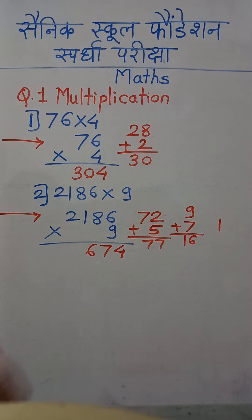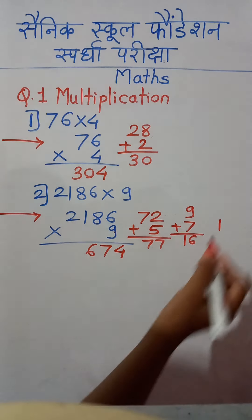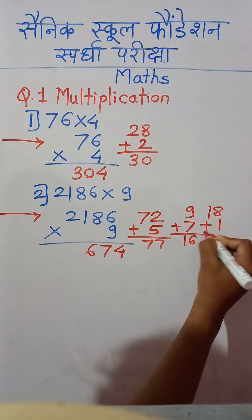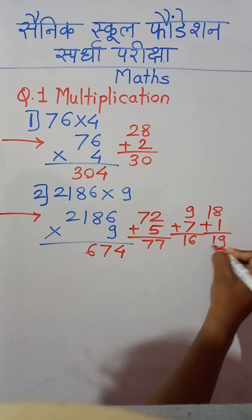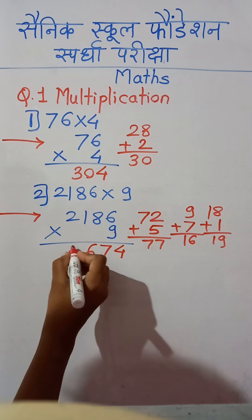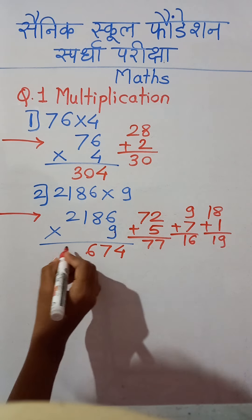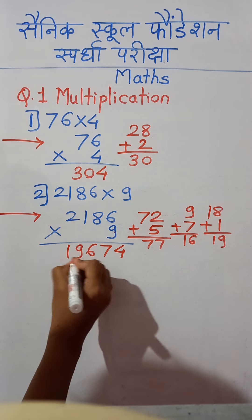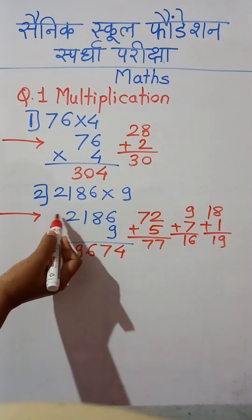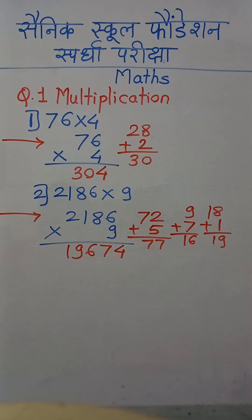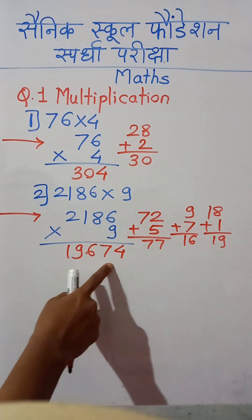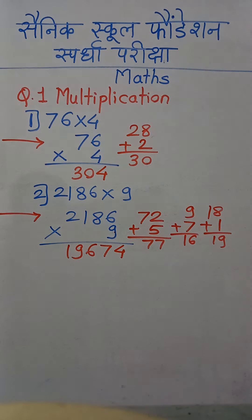Now 9 multiplied by 2: 9 twos are 18, and plus carry 1 is 19. We write 19 directly here because there is no digit on the left-hand side of 2. So we get the answer 19,674.